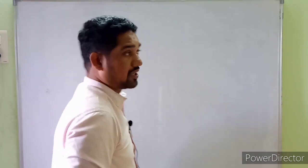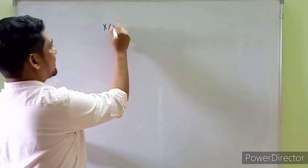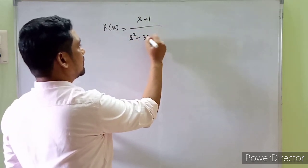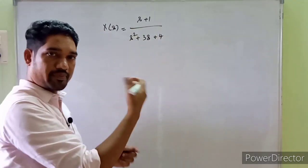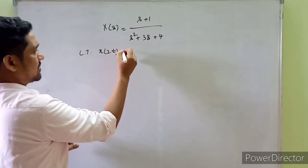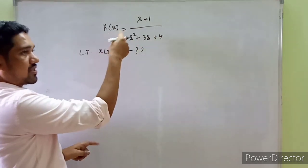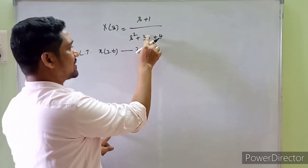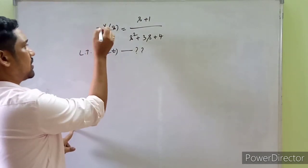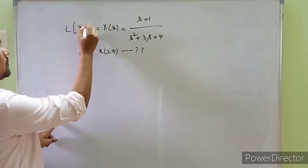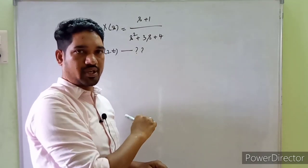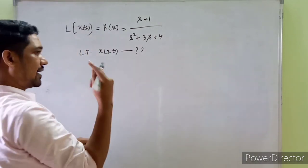A numerical example will be very helpful for better understanding. Suppose the Laplace transform of a function X(s) is given as (s+1)/(s²+3s+4). The question is: obtain the Laplace transform of x(2t). So the given X(s) = (s+1)/(s²+3s+4) is the Laplace transform of x(t), and we need to find the Laplace transform of x(2t) using the time scaling property.